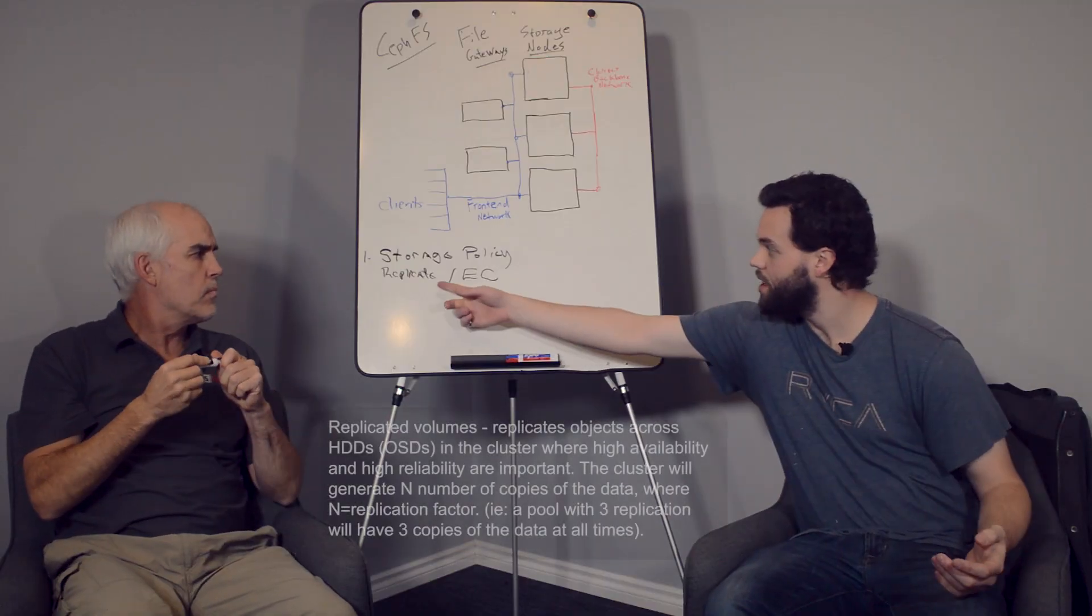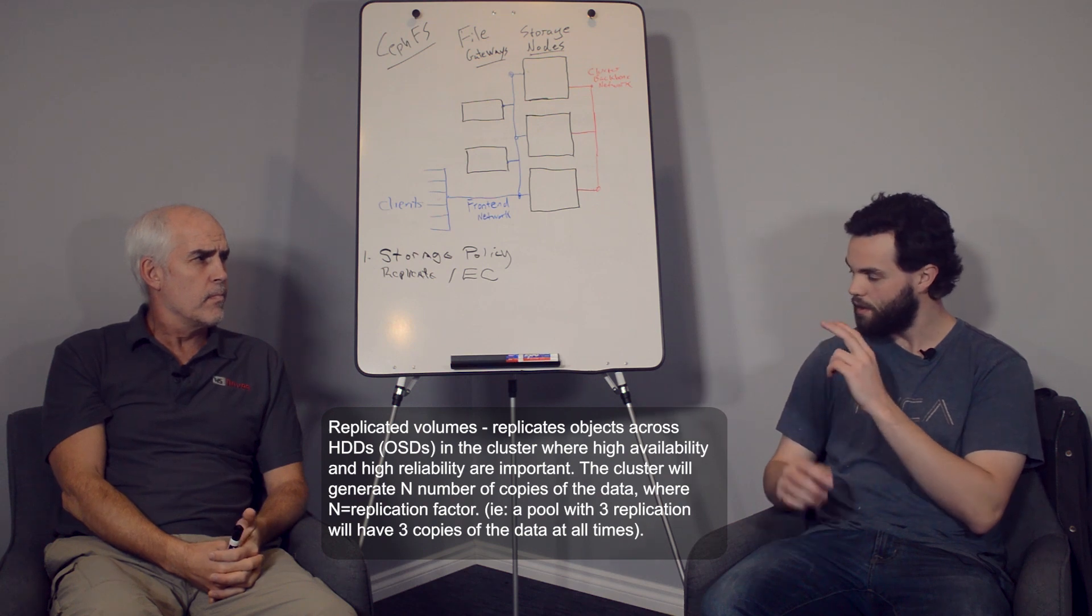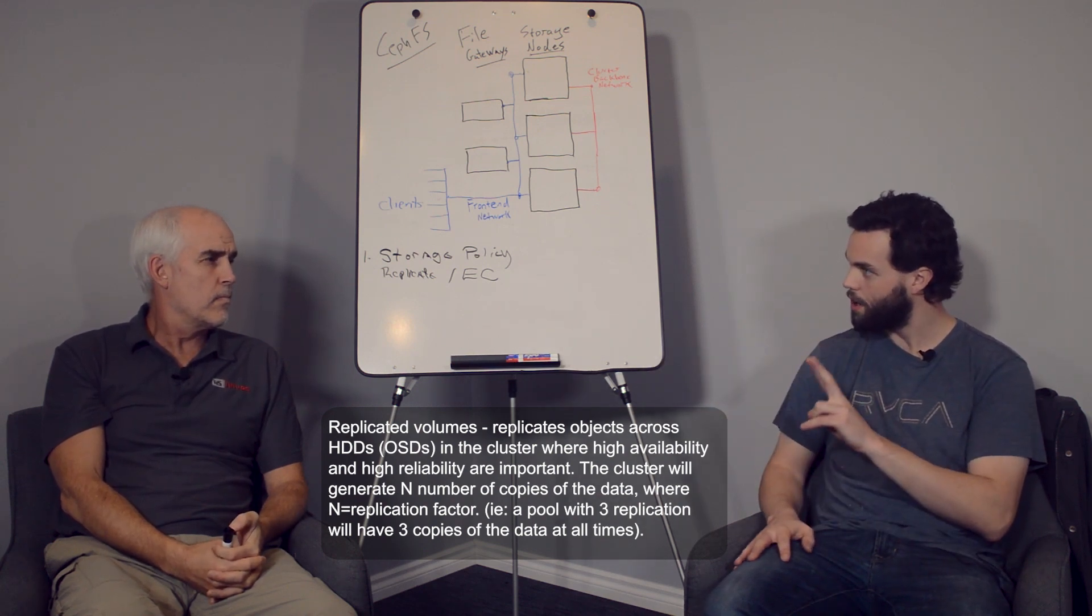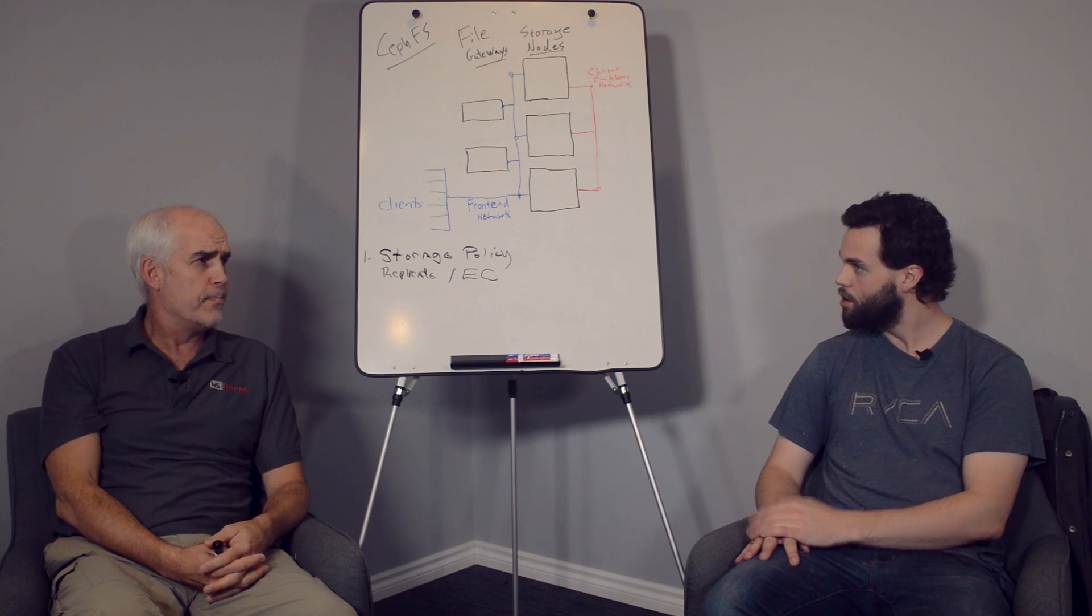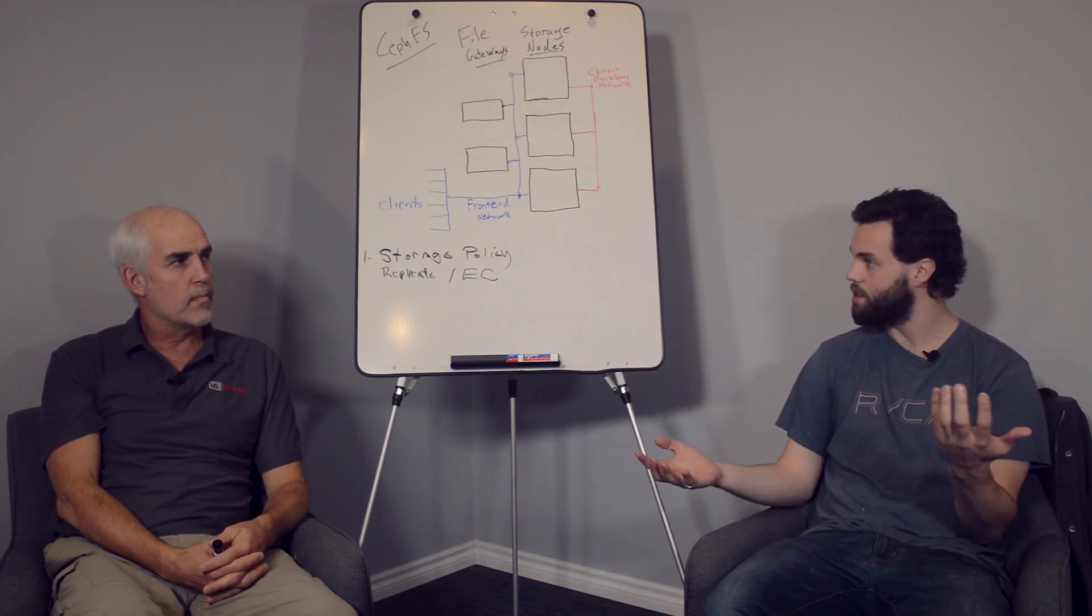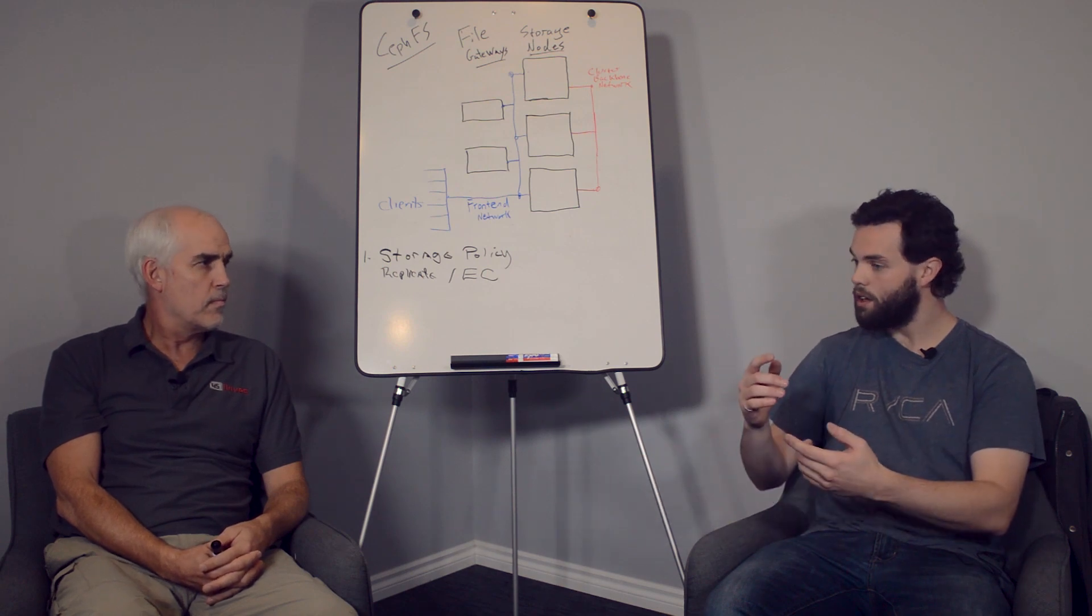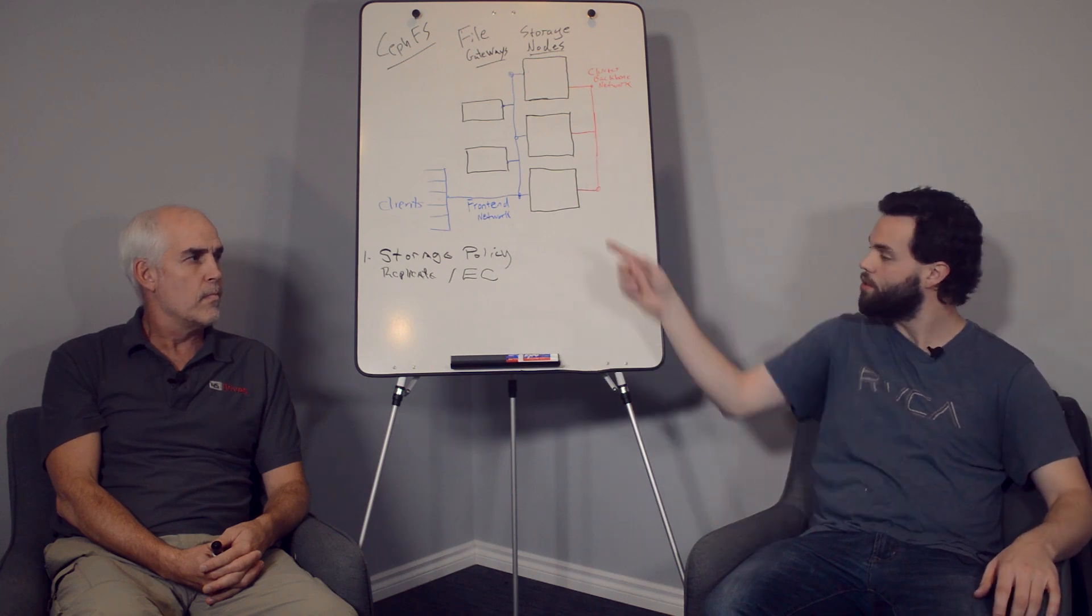So replicate is easy to kind of wrap your head around. If you have two replica, if you set the rule on your pool to be a two replication factor, you're going to get two copies of your data. You only effectively half your storage. So this is like RAID, a mirror. And the fun thing with Ceph is you can knock it down to one and have one copy if for some reason that's useful to your application, or you can go up to three, four if you're super paranoid or you want it spread out across multiple servers. So replicate is easy to wrap your head around.